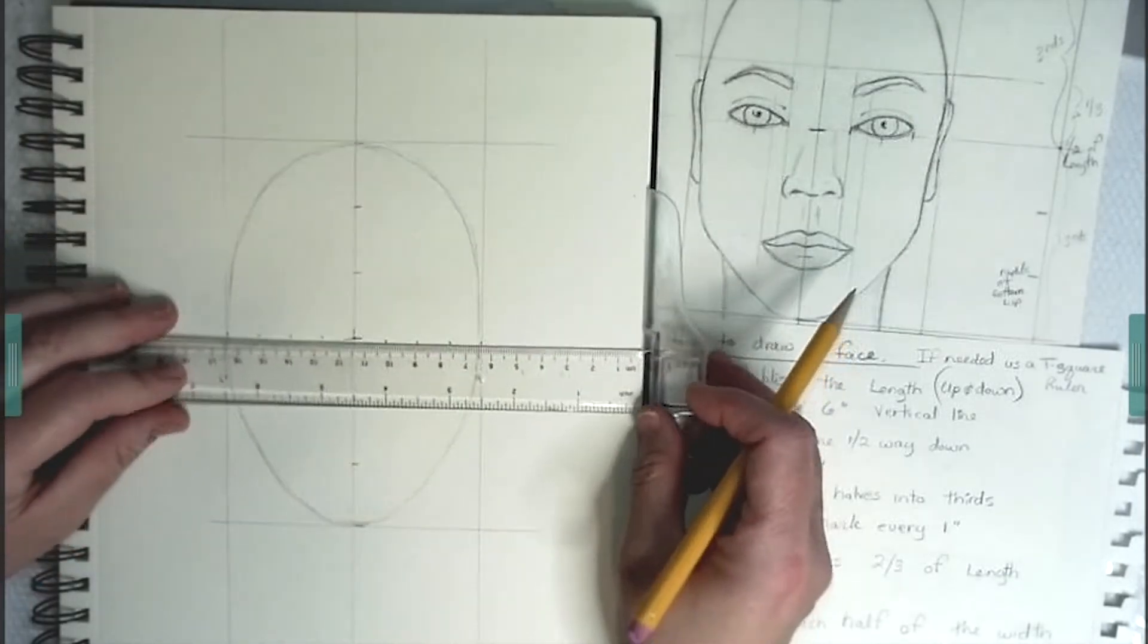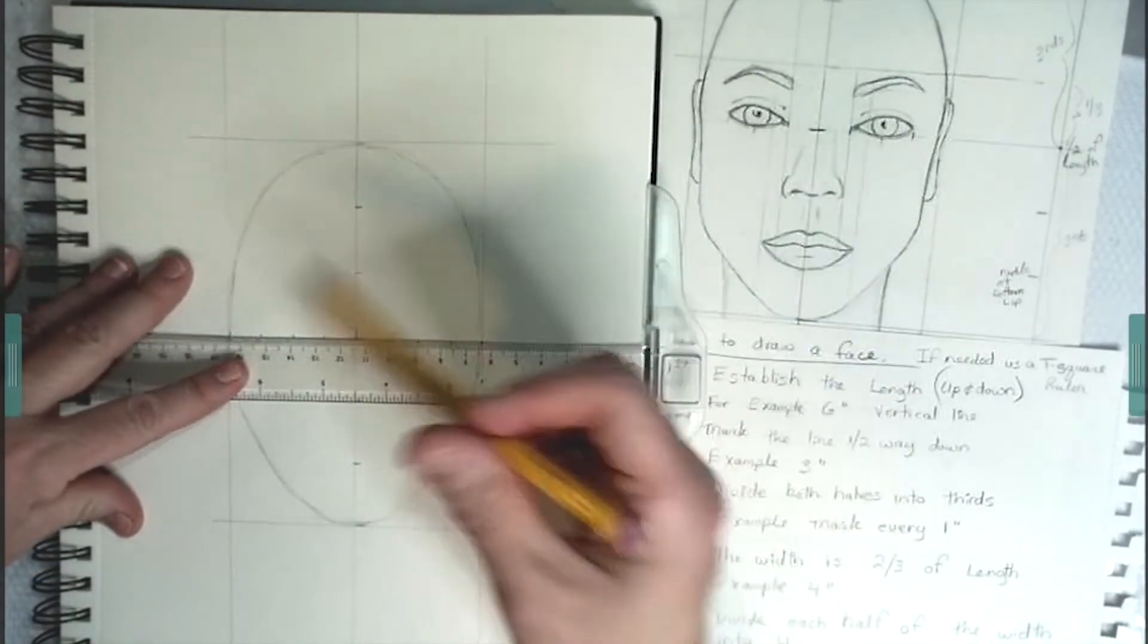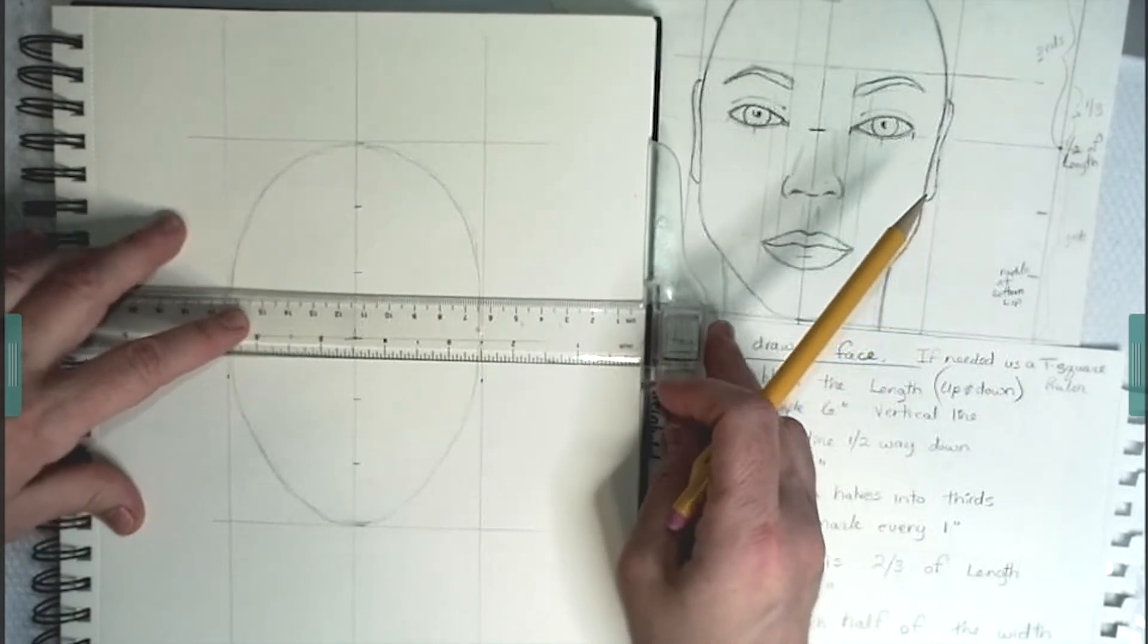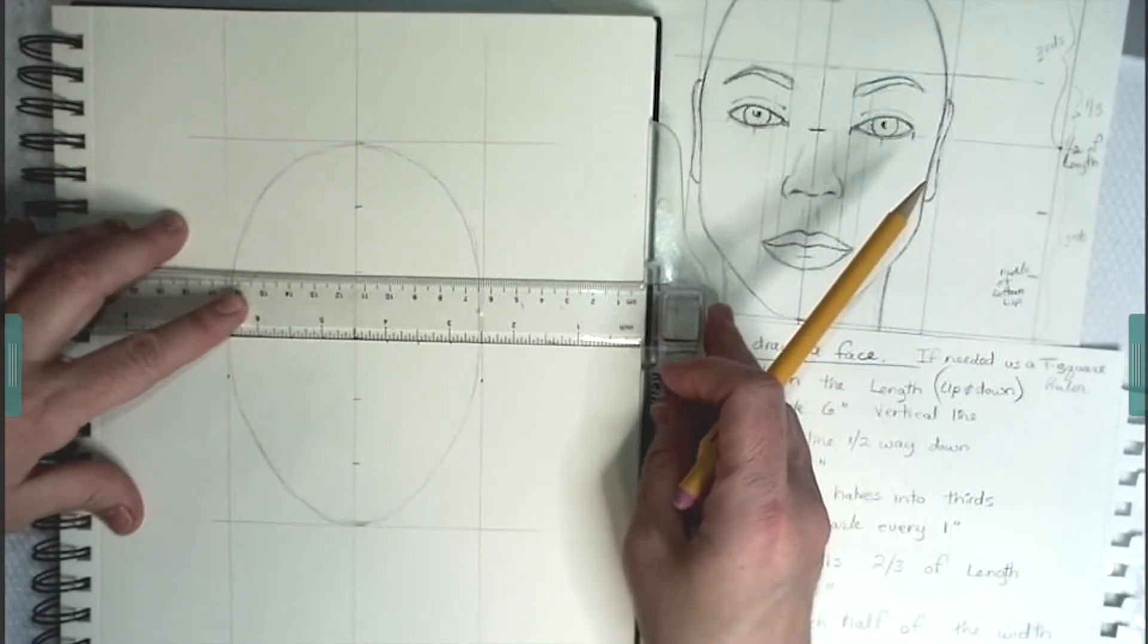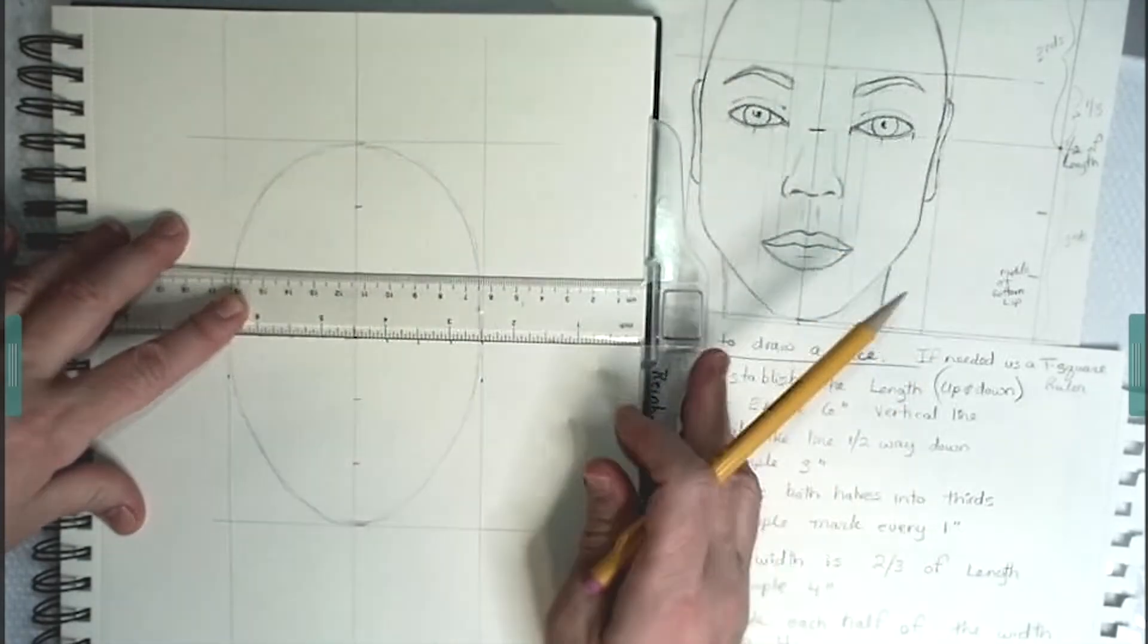Using your T-square, square off the middle of the box. And then also make some lines on the thirds that are vertical.